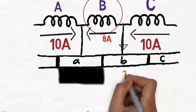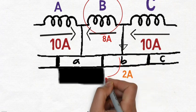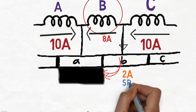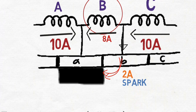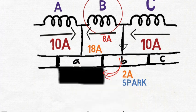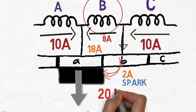But because of over-commutation, only 8 amperes flow throughout coil B and the remaining 2 amperes jump directly from the segment to the brush through the air, producing a spark. Hence 18 amperes from coils A and B, plus 2 amperes from the spark, gives 20 amperes at the brush side. This is the end of the process of commutation.